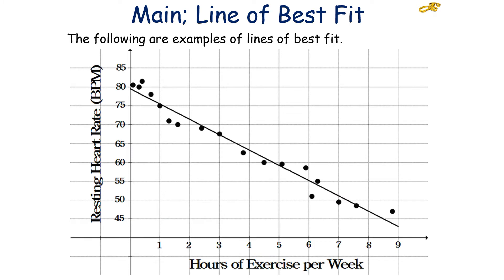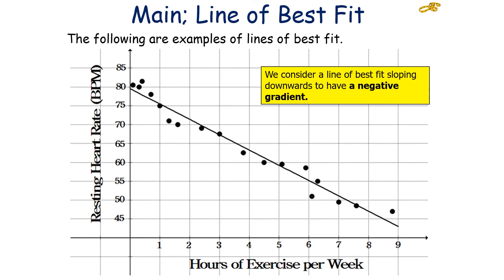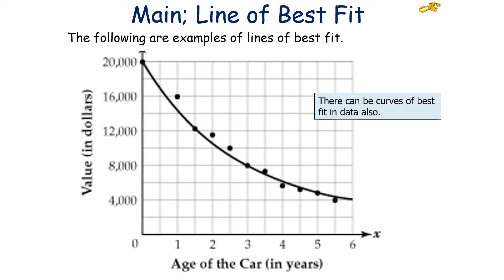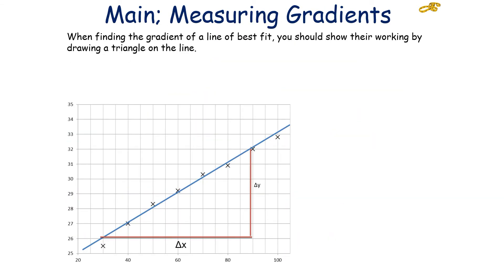Here is another example of a line of best fit. When we have a line of best fit sloping downwards, we say it has a negative gradient. Always remember the negative sign on a downward gradient, as this is a commonly tested skill in examinations. In addition to straight lines of best fit, you can also get curves of best fit in the data.